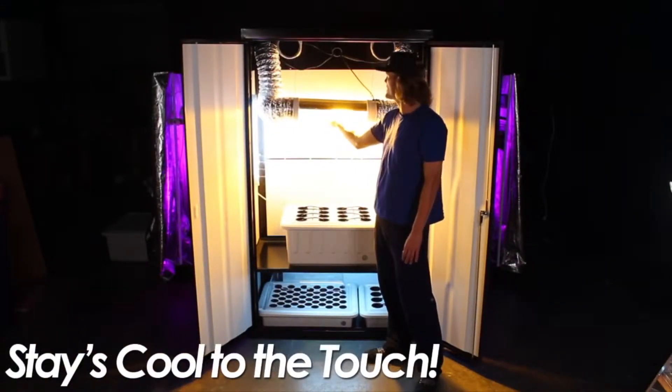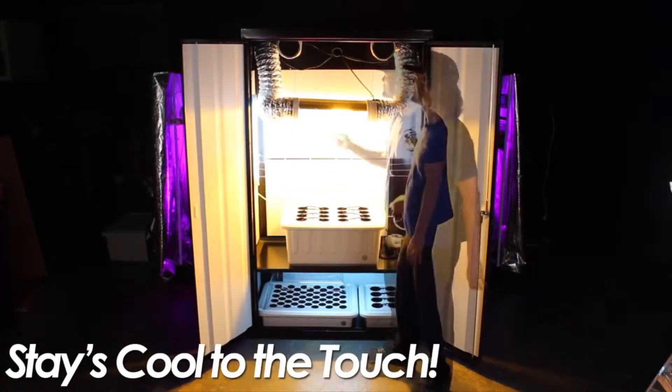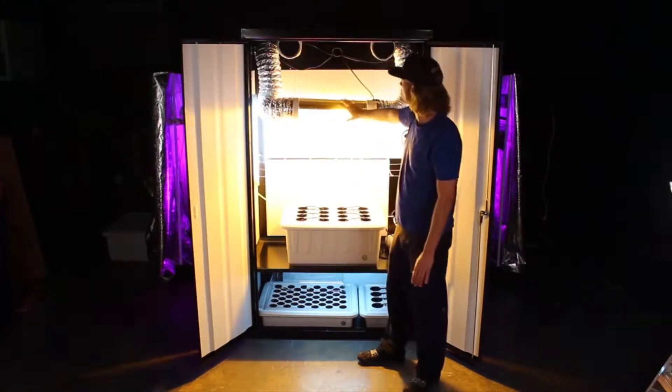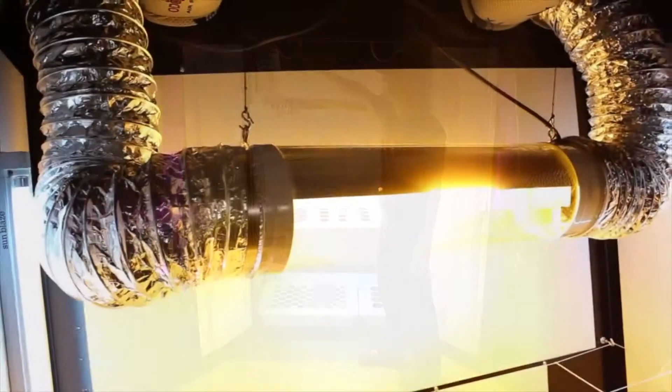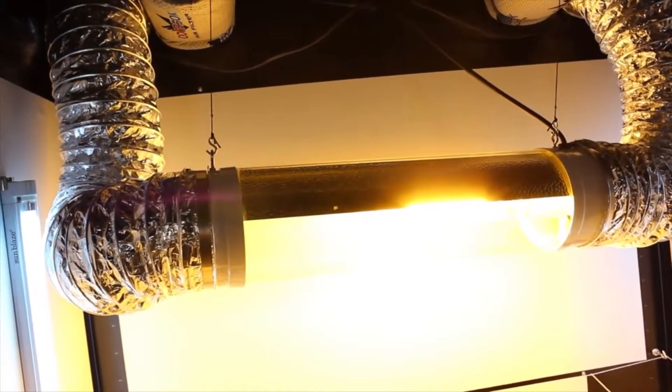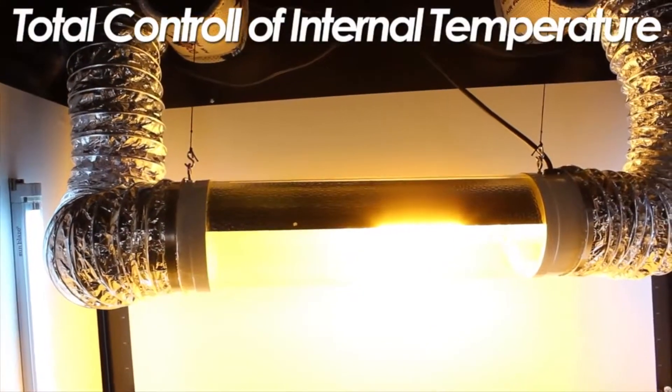This is a 600-watt light and I can put my hand right up to it. It's very important to have a closed-loop circuit like this, where there's one fan blowing in, one fan blowing out, separate from the output fans. This means you have total control of your internal temperatures.